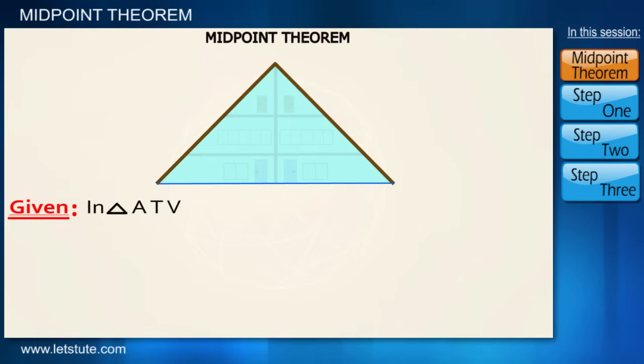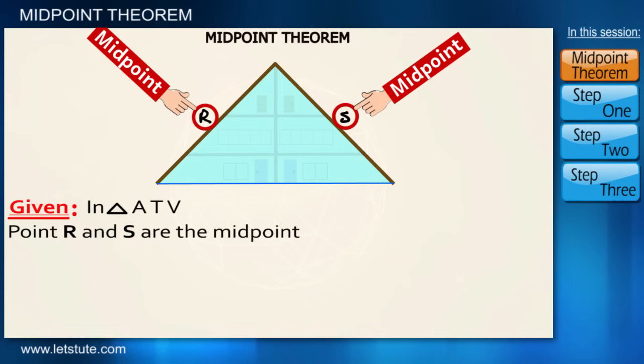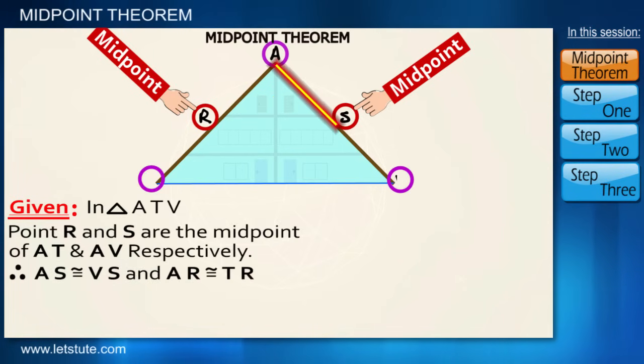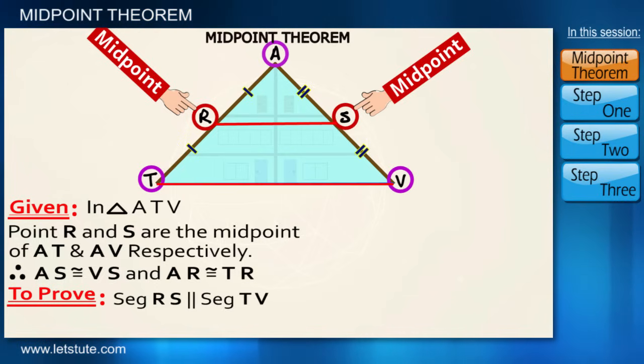We have taken point R and S as midpoints because of which AS is congruent to VS and AR is congruent to TR. Now in here we have to prove that RS is parallel to TV and RS is half of the TV.